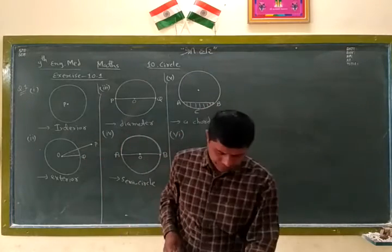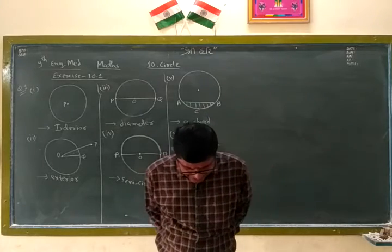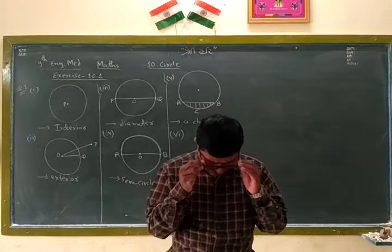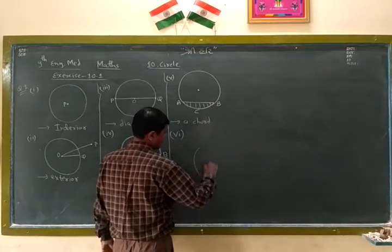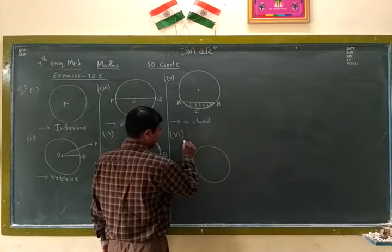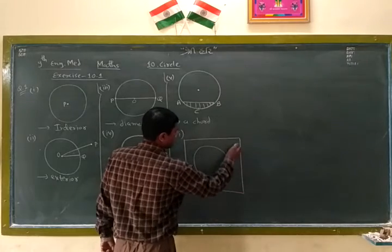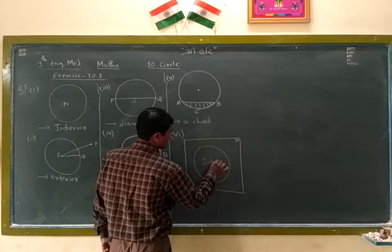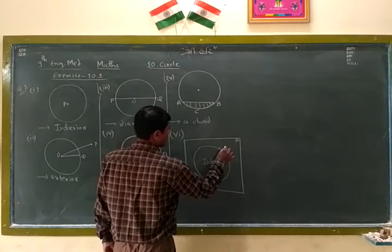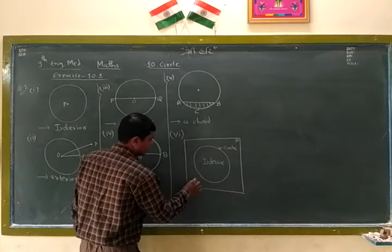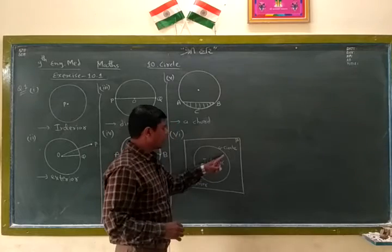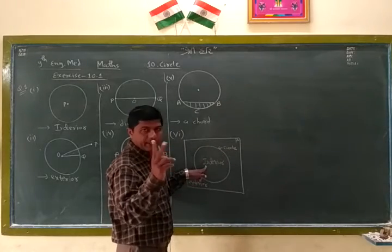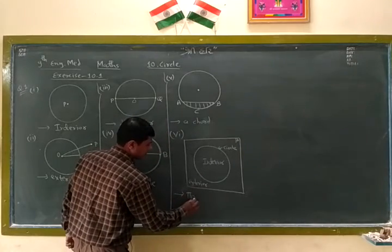Sixth number. Here, a circle divides the plane on which it lies in the part of circle. Circle dekhte hain. This is the plane. Suppose beta plane. So here, this is the interior part. Interior circle. This is also circle. And this is the exterior. So how many part? This circle divides the plane into the three parts. One exterior. Second interior. Third circle. Answer three.